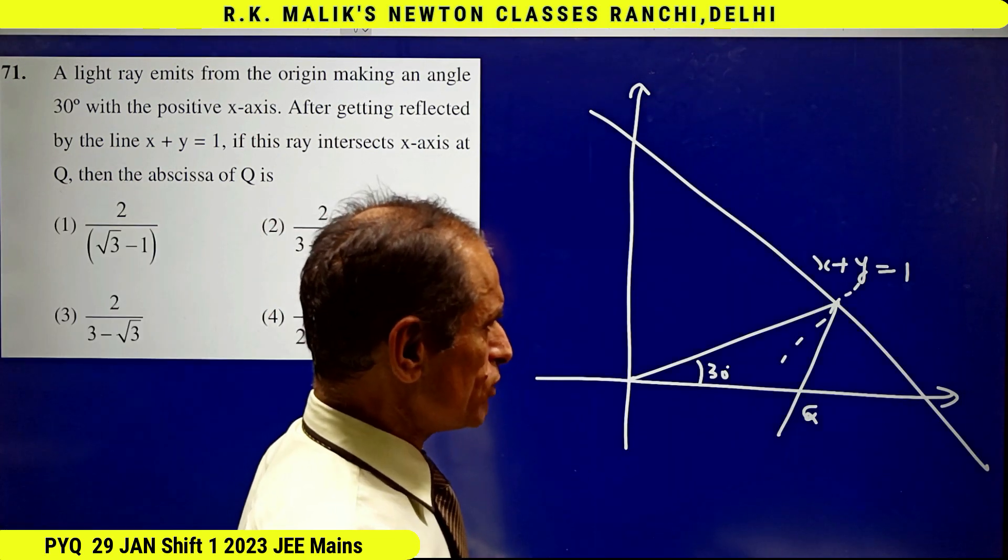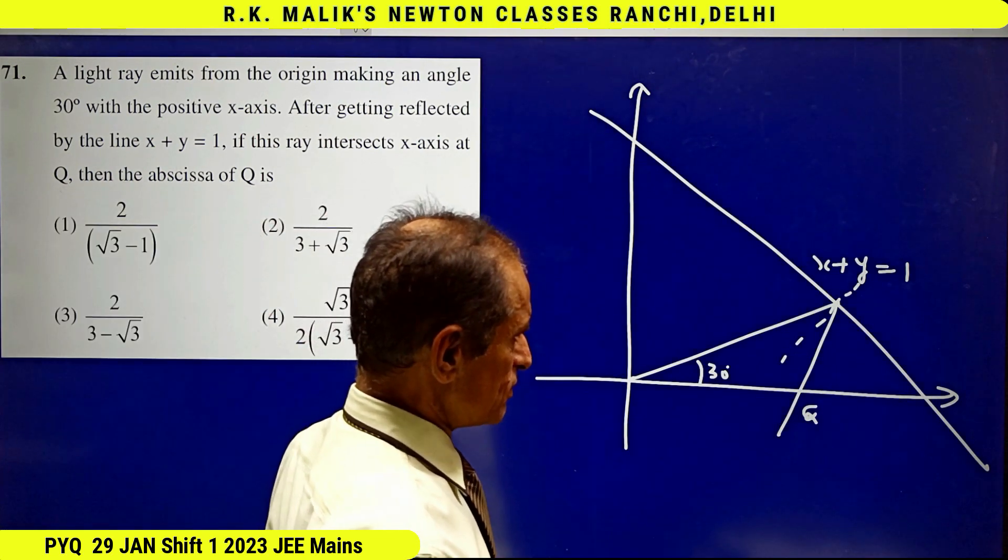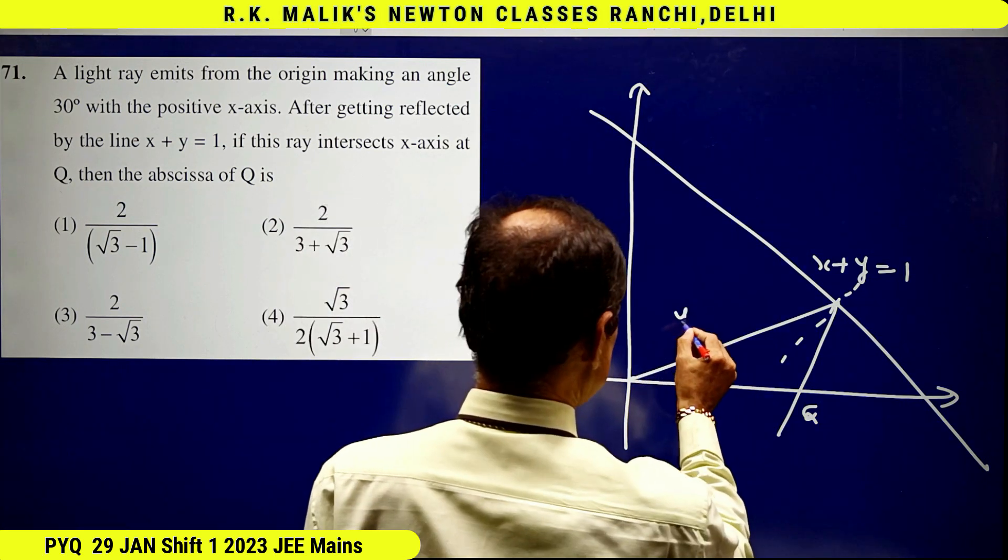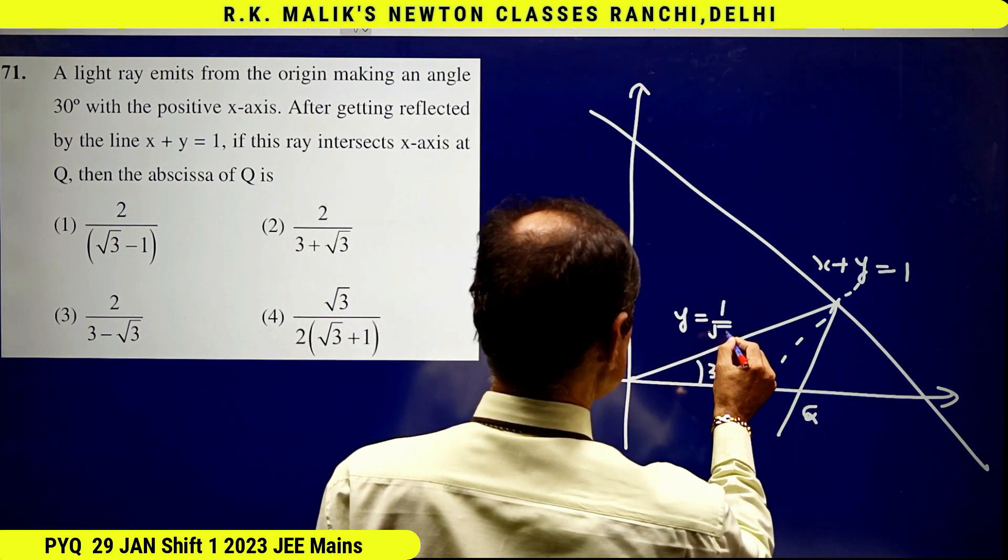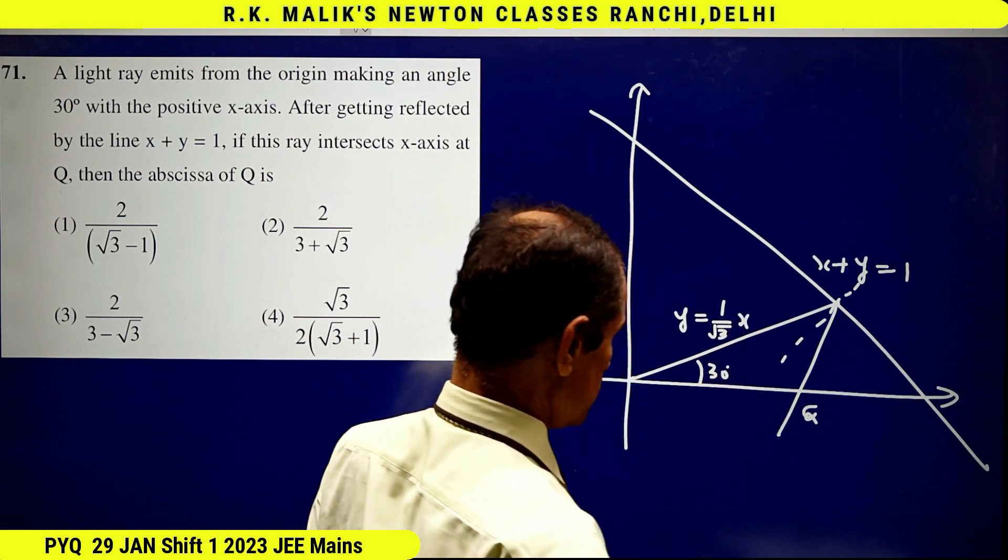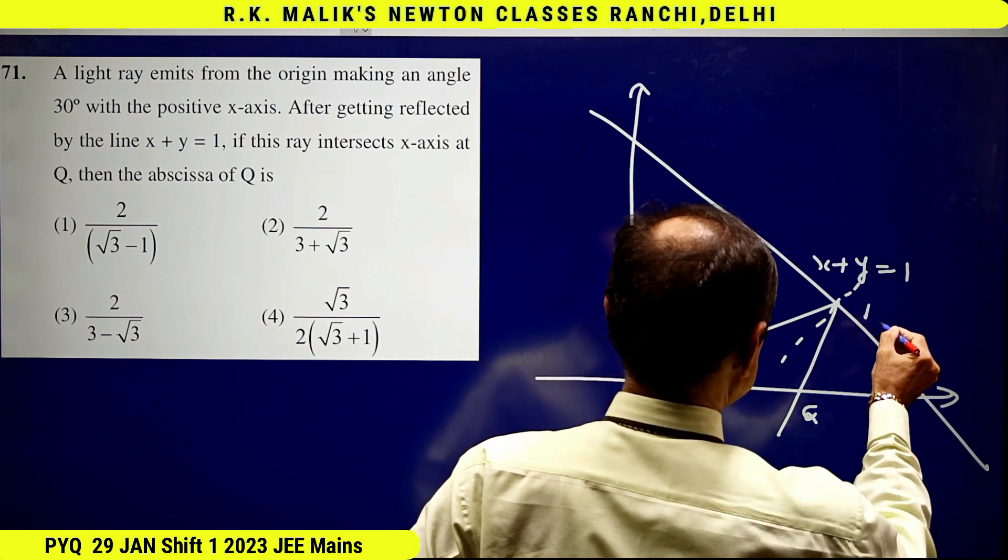There are so many methods of doing this question. First method: clearly the equation of this line is y = (1/√3)x. Let this point be A.